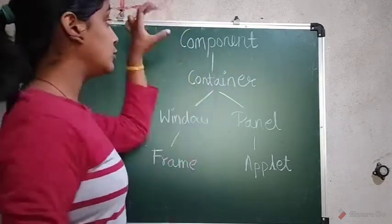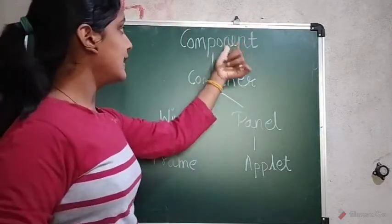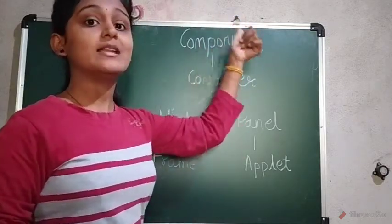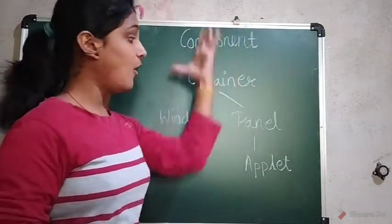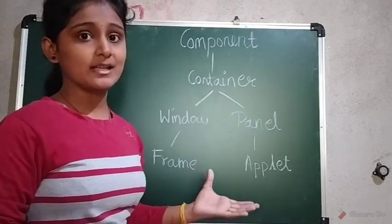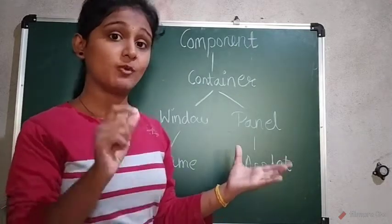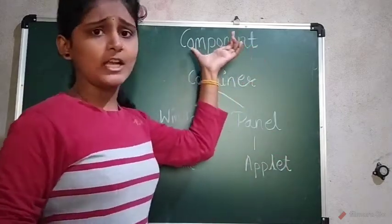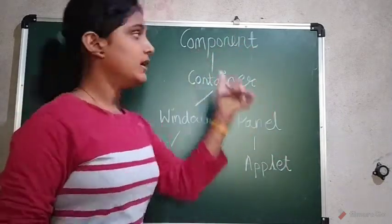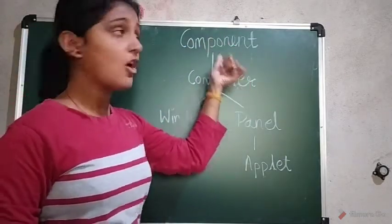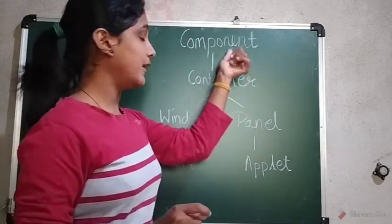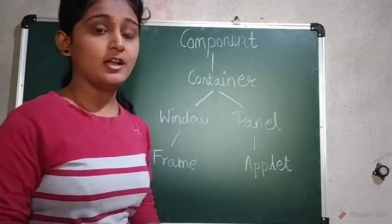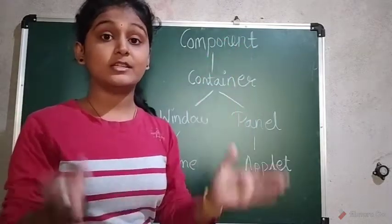The first one at the top of the hierarchy is the Component. Normally, before Component there is Object — Object is the superclass for all these classes. So in MCQs, if there is an option of Object then it's the correct option, otherwise Component is the correct one. Component is a class of AWT which comes under the java.awt package.